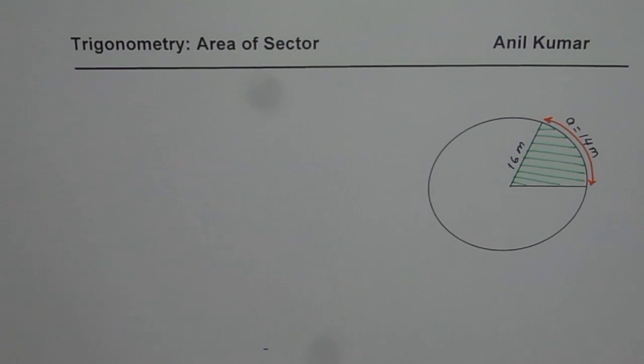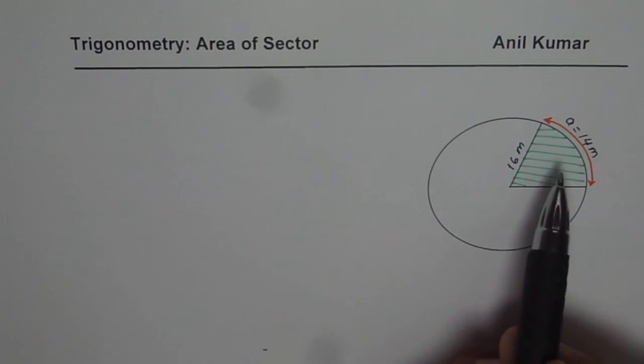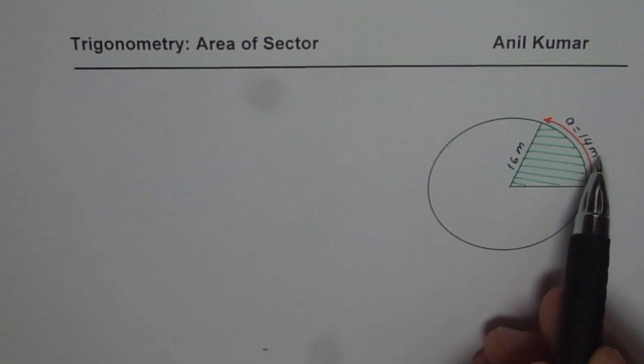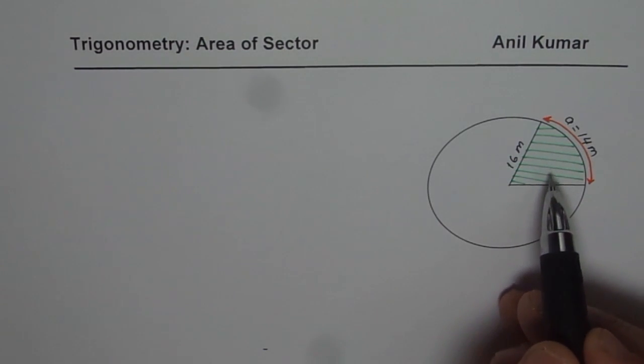I am Anil Kumar and in this video we will learn how to find area of a sector when arc length is given to us. Consider this figure here we have a circle with radius of 16 meters and arc length of 14 meters. You need to find area of the shaded portion which is called a sector.